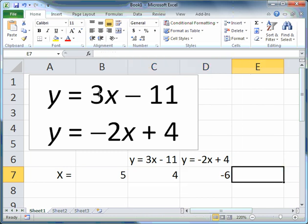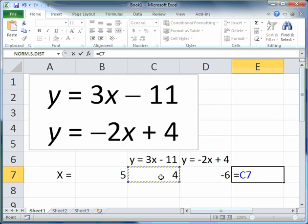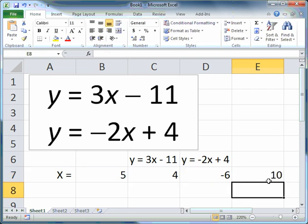In cell E, I'm going to enter the difference between those two values of y. The value of y from the first equation minus the value of y from the second equation. Ideally, the value produced in cell E7 should be 0 if that was the correct value of x that was part of the solution.